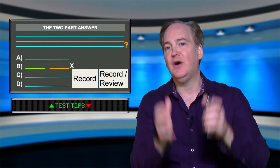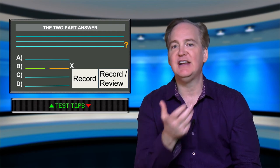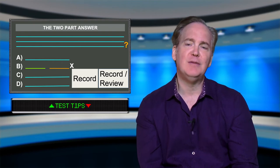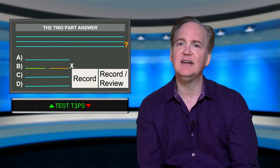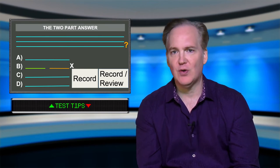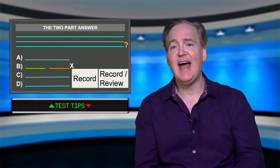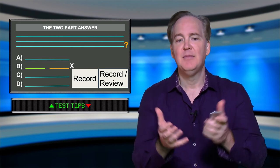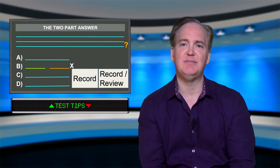Now, here's another one of the tricks that they sometimes present on the exams, and it's the two-part answer. And they will combine something that the test taker knows to be correct with something that is incorrect. And by default, that choice has to be incorrect.